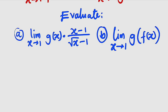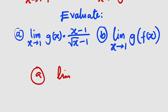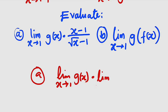For the first one, you should know that the limit of a product is the same thing as the product of the limits. And hence, we can rewrite this as the limit as x approaches 1 of g of x, multiplied by the limit as x approaches 1 of the second function, which is x minus 1 divided by the square root of x minus 1.